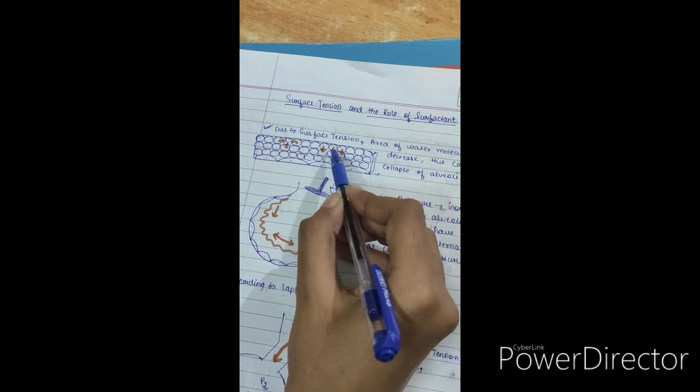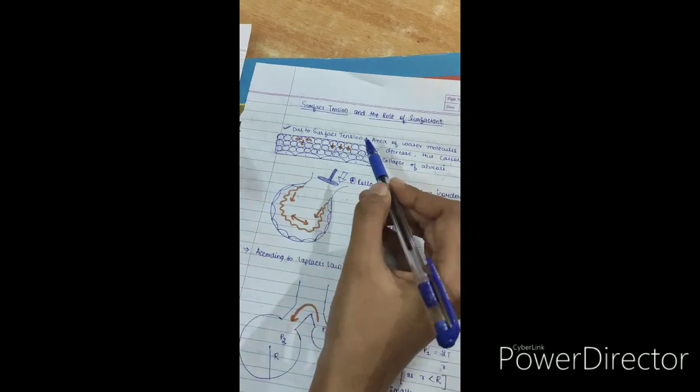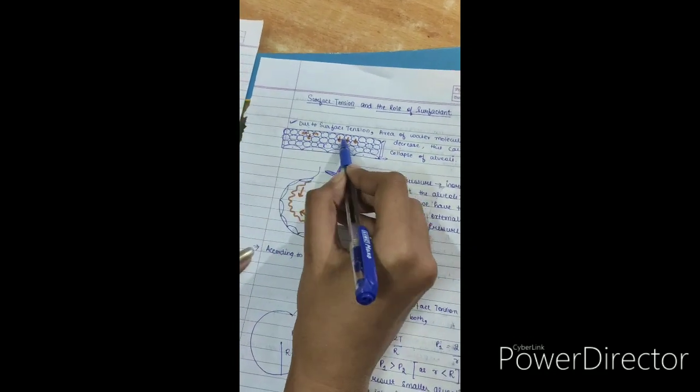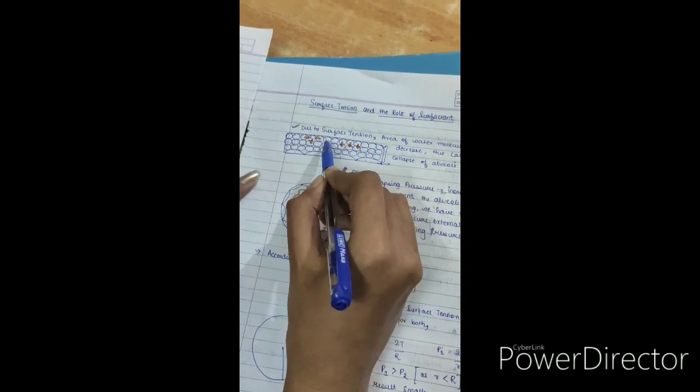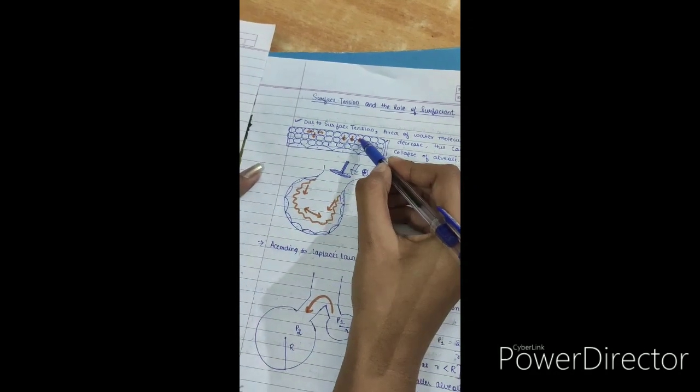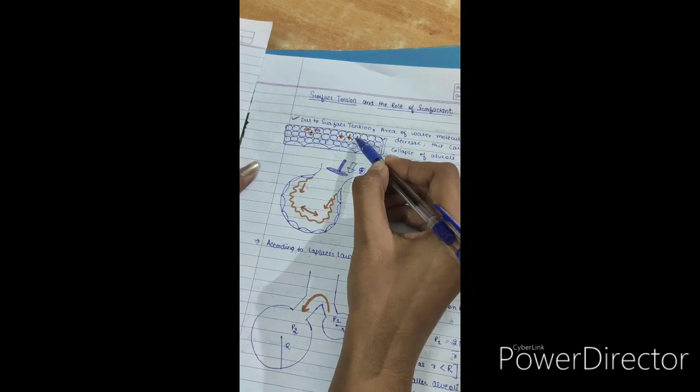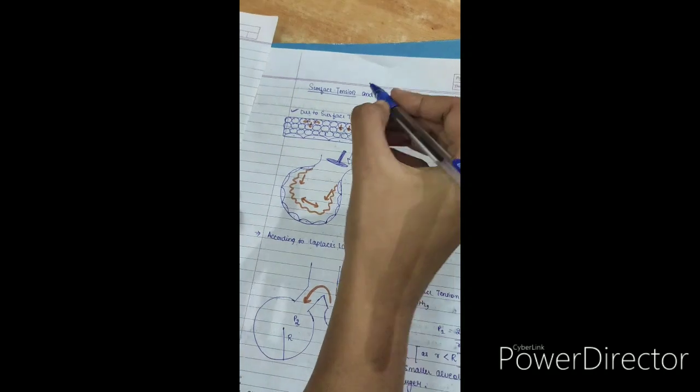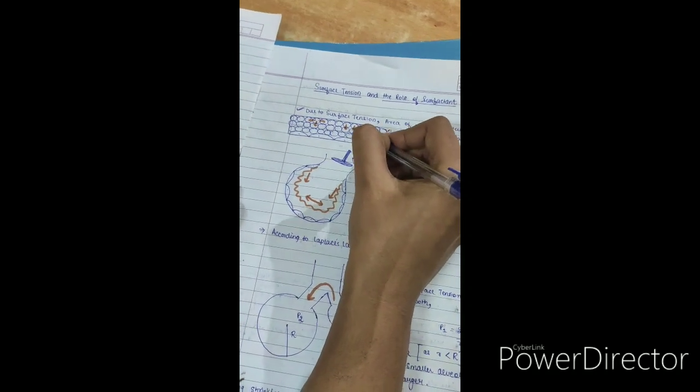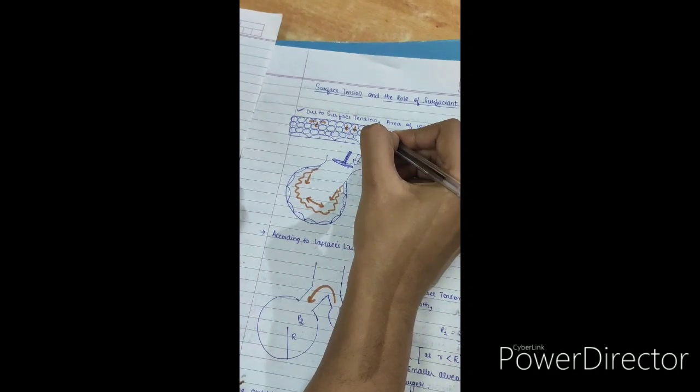Water will exert surface tension. If these are the water molecules at the uppermost layer, the superficial surface, they are under the attractive pull of the water molecules beneath them. Now these water molecules, let us consider the water molecule in the middle of this layer.